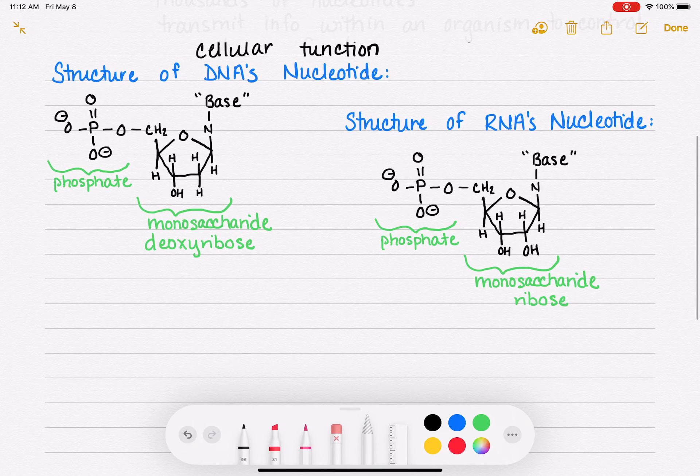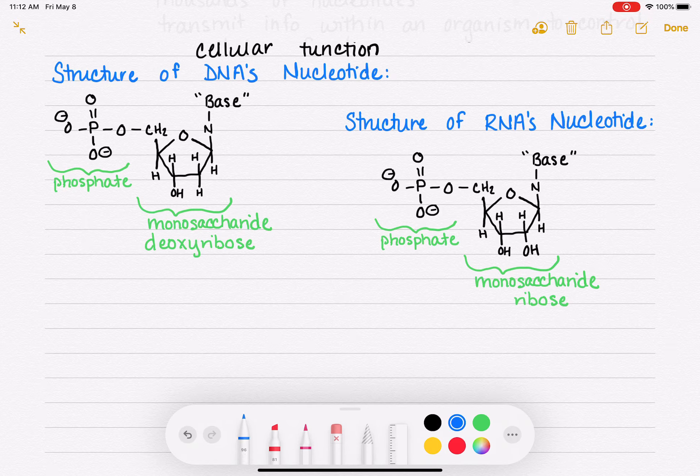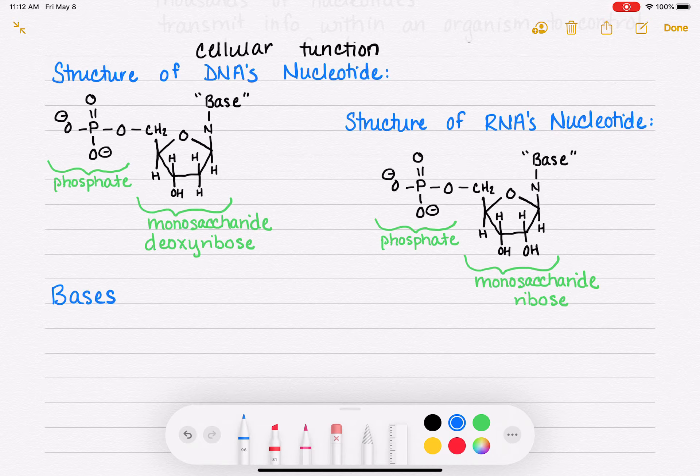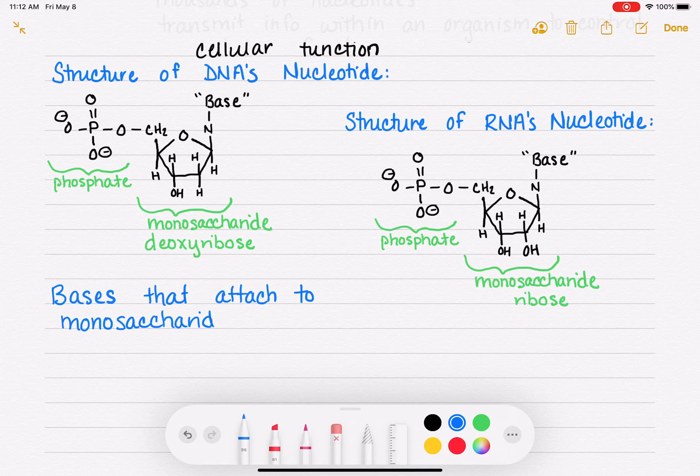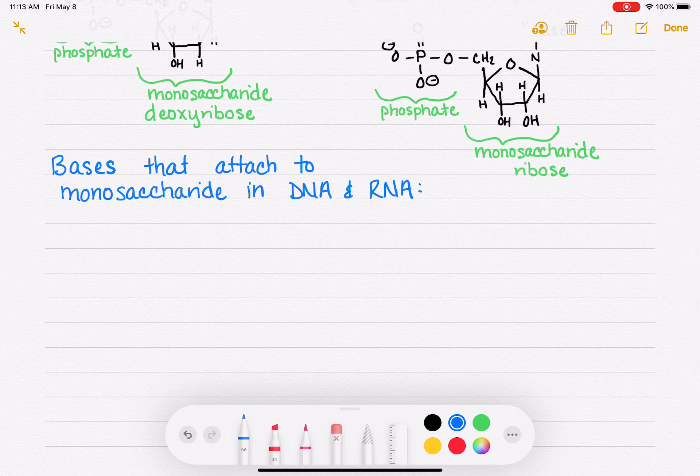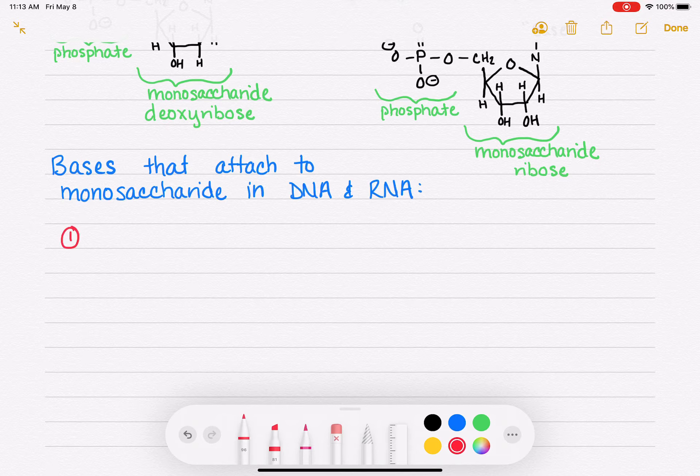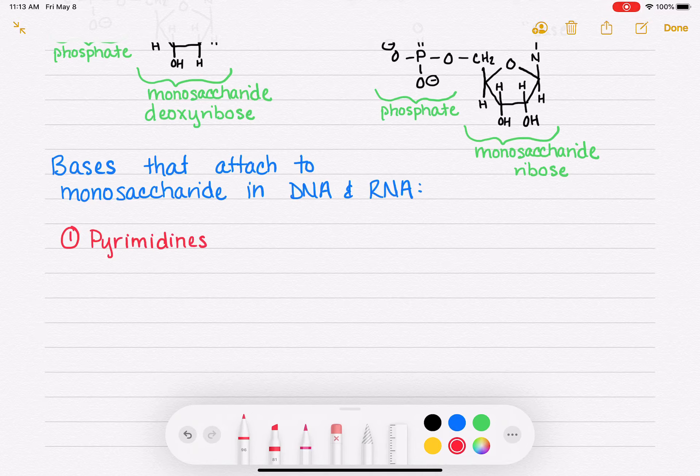So last thing that we're going to talk about is what are the bases that attach to the monosaccharides? What do they look like? So these are going to be the bases that attach to the monosaccharide in DNA and RNA. There's actually five different bases that we can attach. And the five different bases, they have two different types. So there's five total bases, two categories. One type is called a pyrimidine. There are three pyrimidine structures.